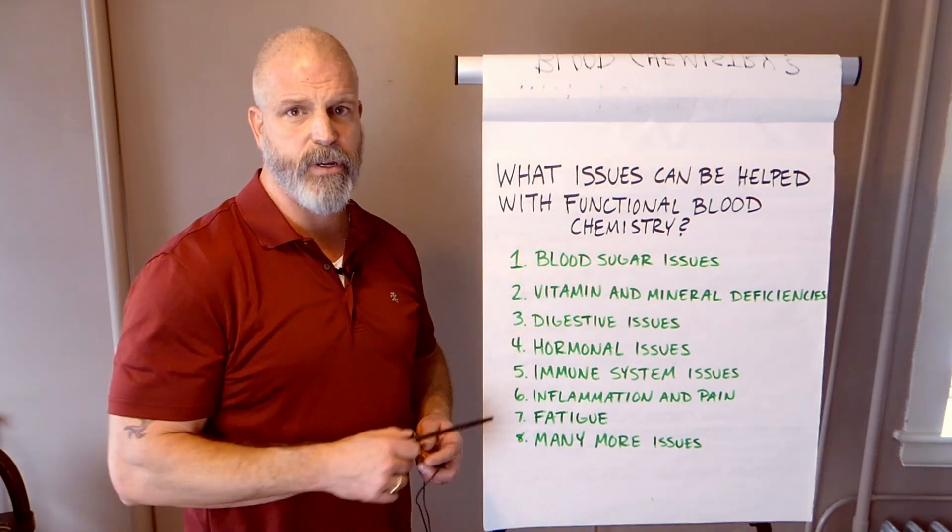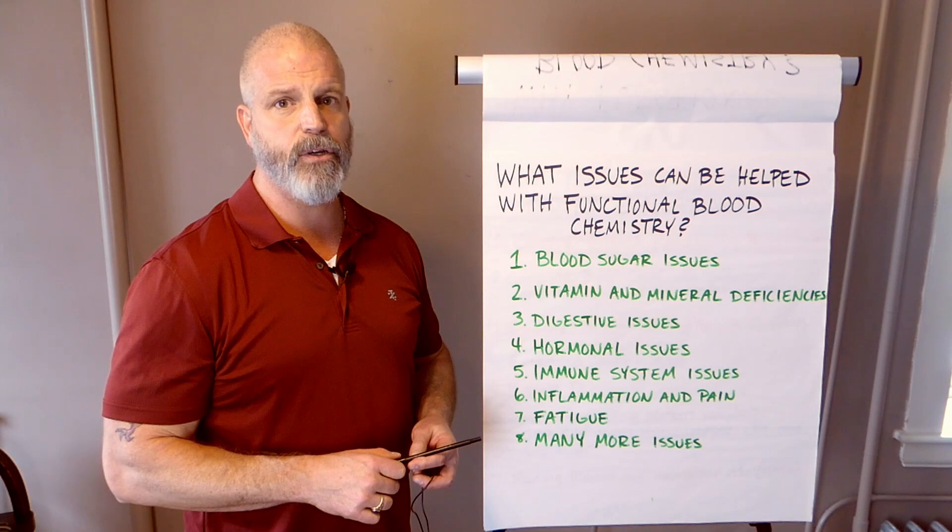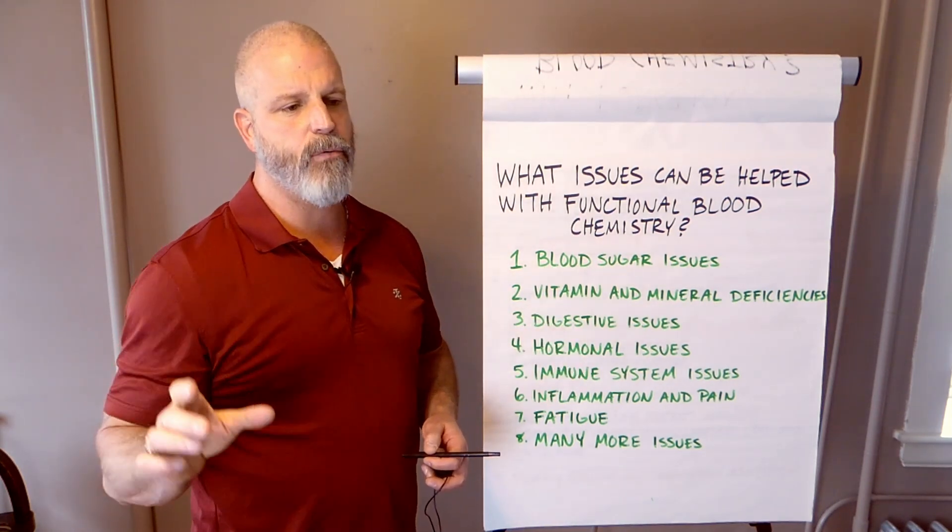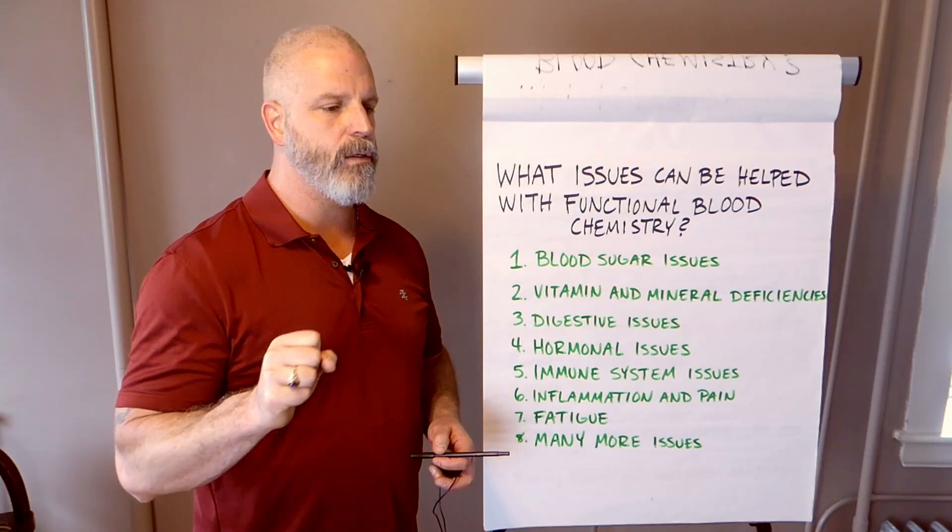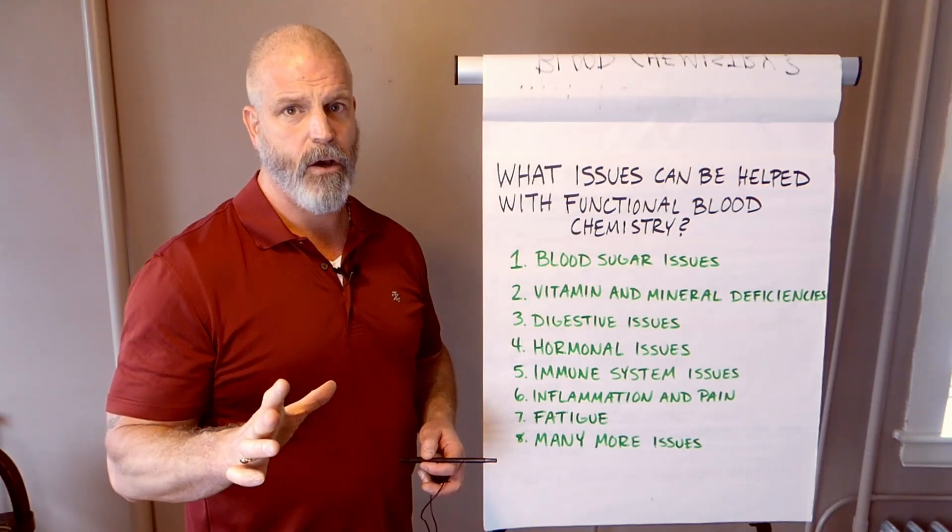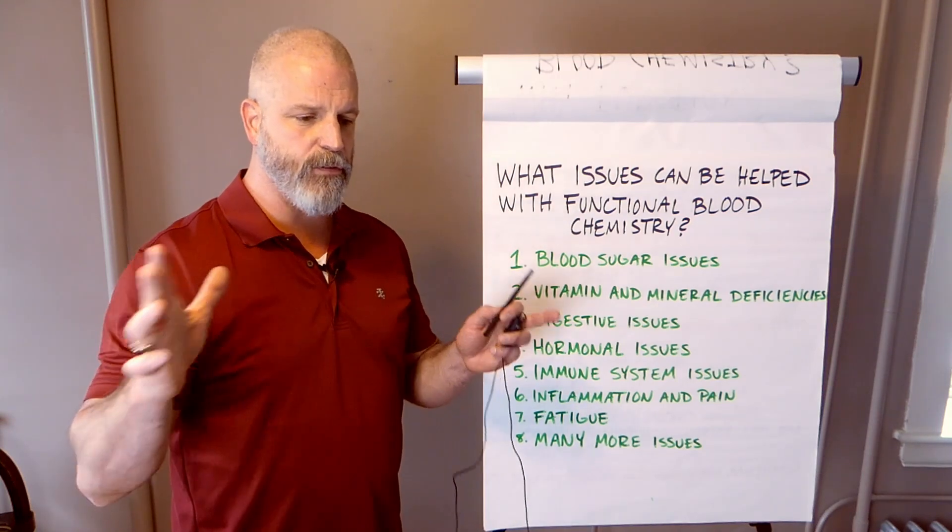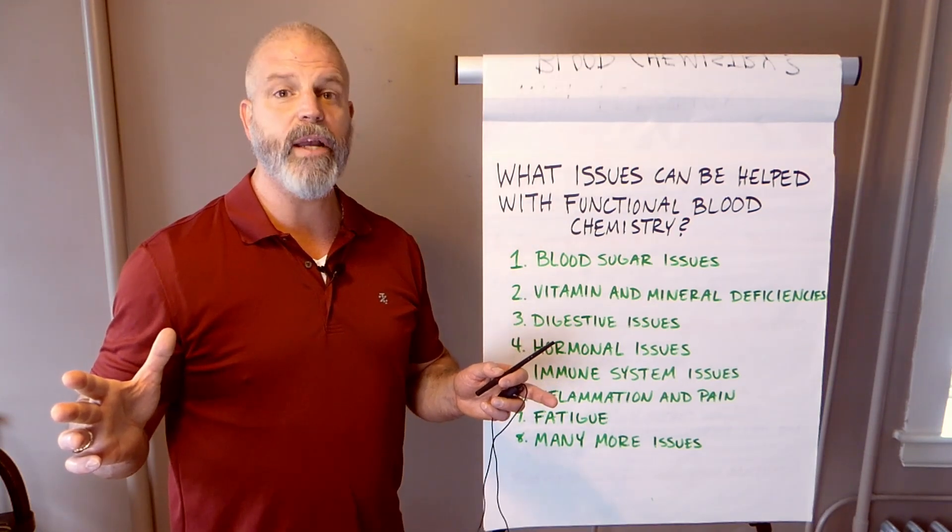We can follow up the functional blood chemistry with different hormonal testing too, where we can target the adrenal response, the thyroid, the ovaries, the uterus, testicles, stuff like that. But we always start with functional blood chemistry. It's much cheaper and gives a much broader range of information.